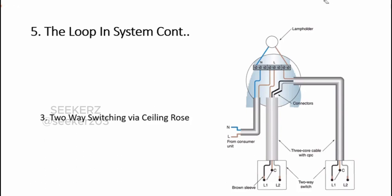Normally regulations state that an earth wire should be used, but in practice we are not always using it in our installations. Because we are not using many metallic parts in our lighting circuit, it is better if you could use an earth wire where metallic parts are present. Otherwise, these two conductors — phase and neutral — are enough.